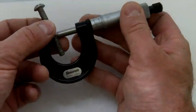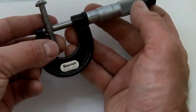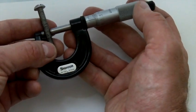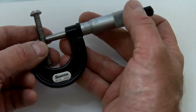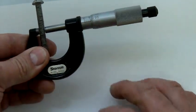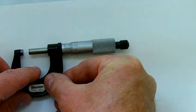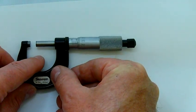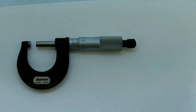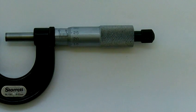So again, we're going to measure across the screw we had a look at in the last video, tightening the ratchet stop and locking the locking nut. Now we'll have a look at the scale. We'll zoom in just a bit.